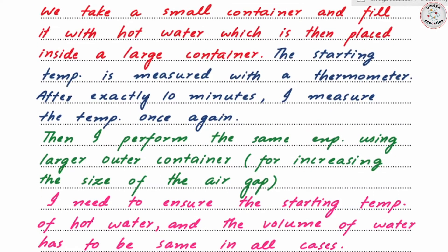So here is the explanation: we take a small container, fill it with hot water, and place it inside a large container, leaving an air gap between the two. The starting temperature is measured with a thermometer. After exactly 10 minutes the temperature is measured again. We ensure that for all cases the temperature is measured after the same time interval to make a fair comparison. Then the same experiment is performed using a larger outer container, giving a larger air gap.